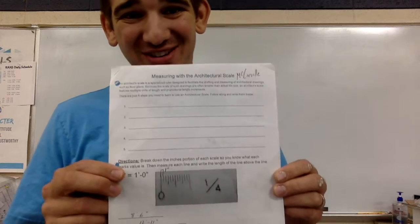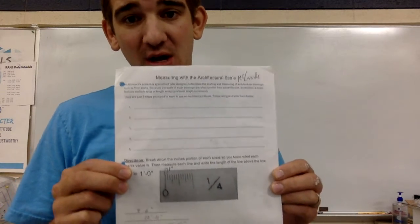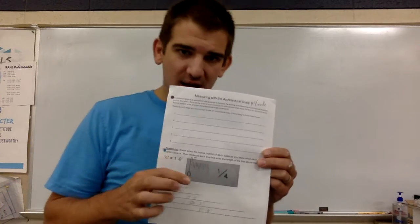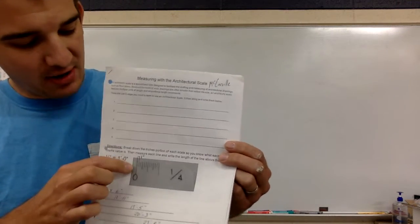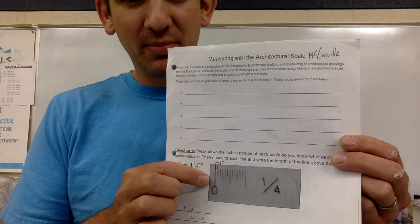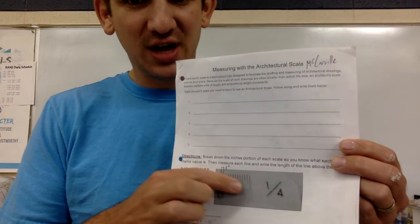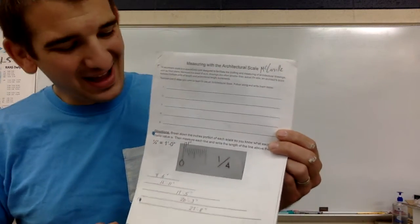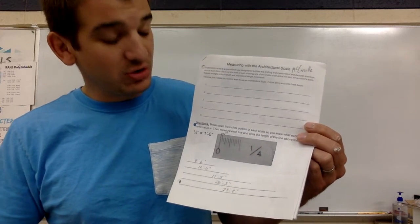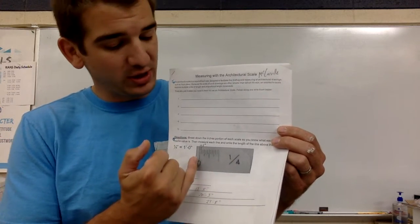Hey class, Mr. McCarvel here. The goal for today is to have you guys finish up this whole packet. So in class we took some time, we went through the individual scales, we talked about how to break down the scale, remembering that this is just a one foot ruler broken down and you guys get to go from there and figure out what each line is equal to.